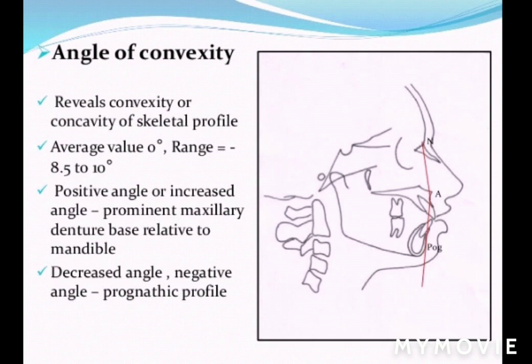Next is the angle of convexity. It reveals the convexity or concavity of the skeletal profile. Its average value is 0 degrees. The angle is positive or increased if a prominent maxillary denture base is present relative to the mandible, and it will be decreased if the profile is prognathic.